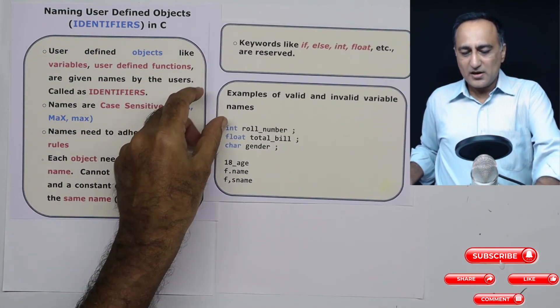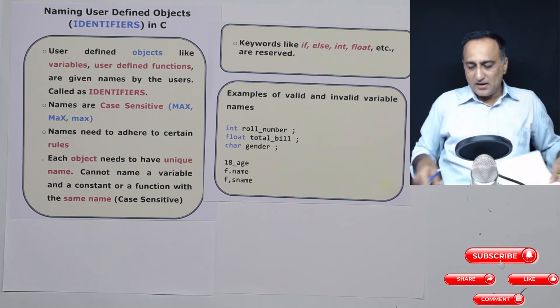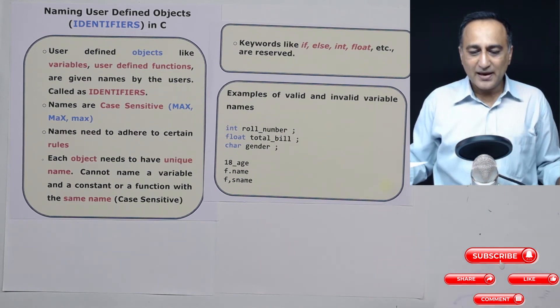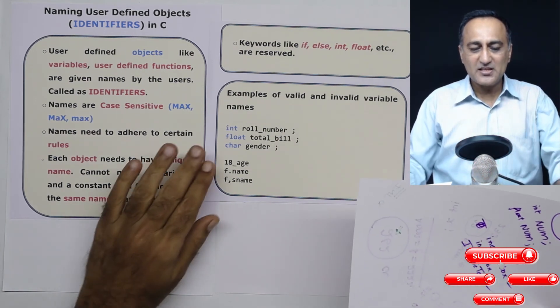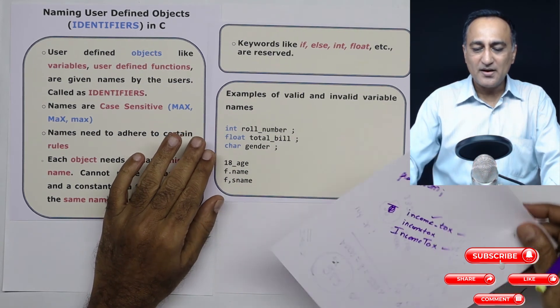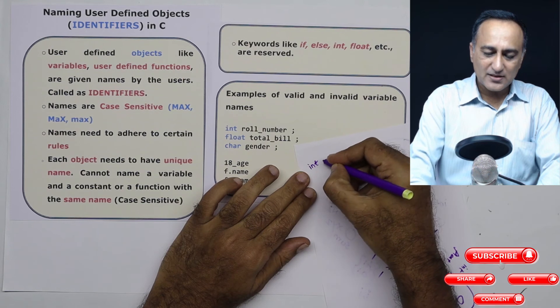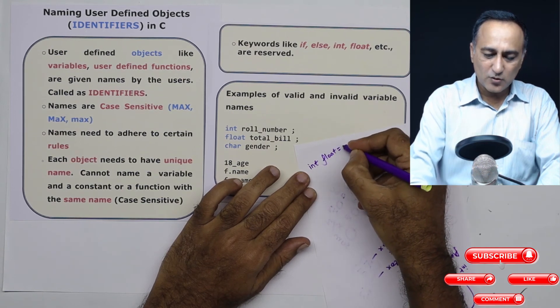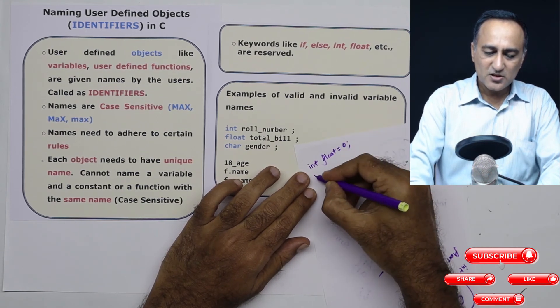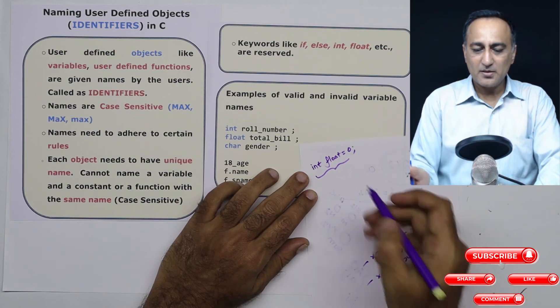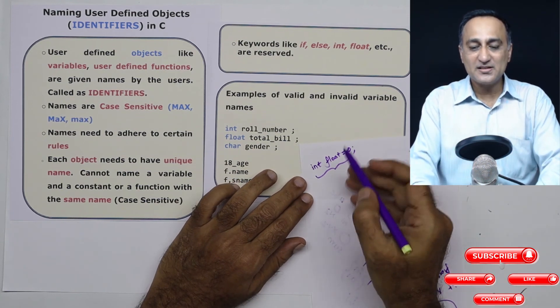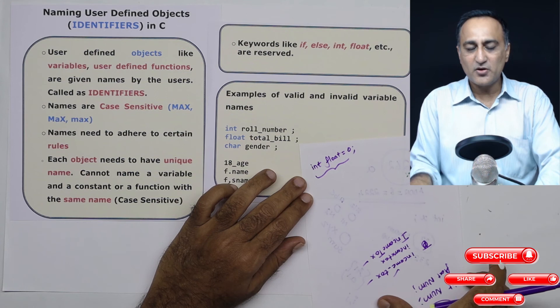You cannot give the names of variables like if, else, int, float, etc. These have special meaning to the C compiler and are called as reserved words. I cannot declare a variable like this, I cannot say int float is equal to zero. This is going to give you a compiler error because float has a special meaning in C. That's why it's called as reserved words.